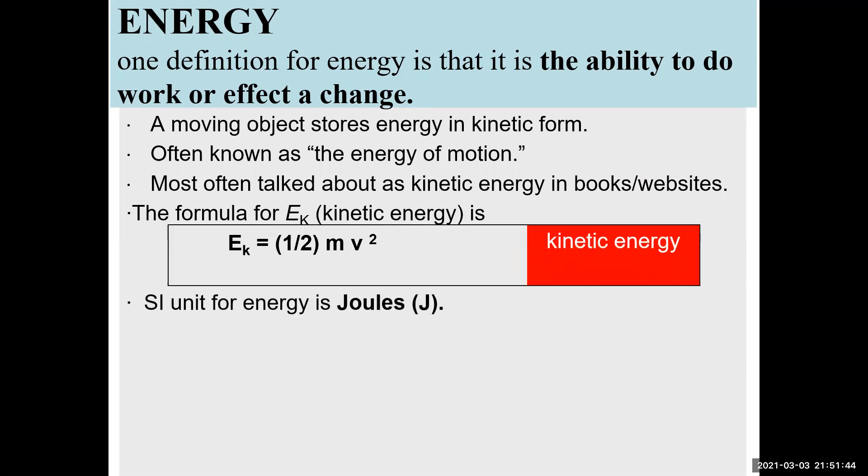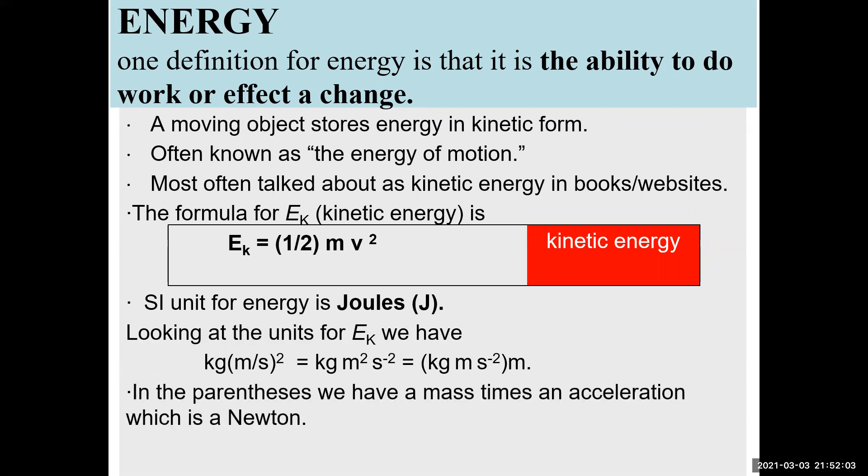The kinetic energy is measured in joules, or the SI unit for kinetic energy is joules. And if you look at the kinetic energy units, mass is kilogram, velocity is meters per second. So it actually is a kilogram meter squared per second squared. Or if you look at the stuff in parentheses there, kilogram meter per second squared, that's simply a Newton. And so you could also think of the kinetic energy as a Newton meter. It's important to think about that way as well.